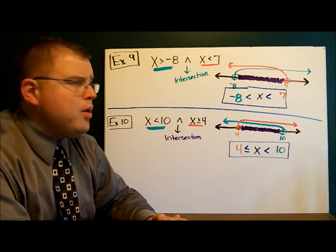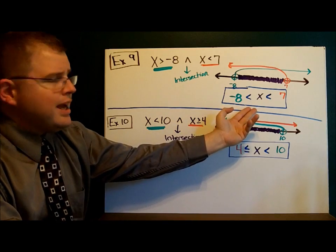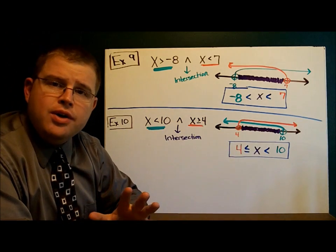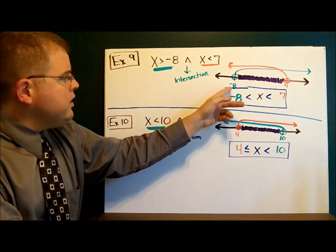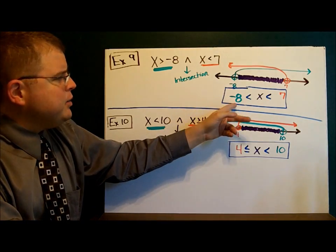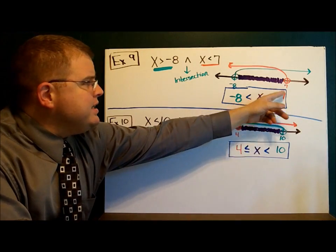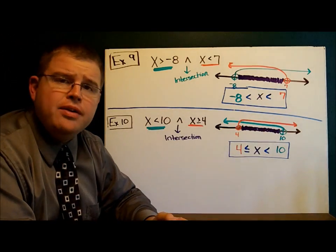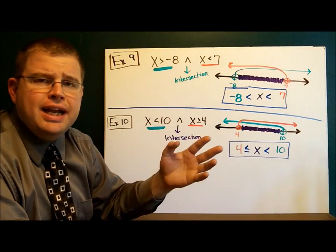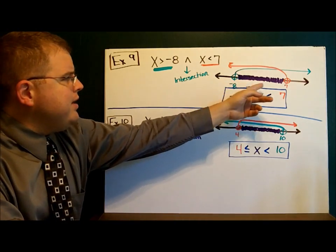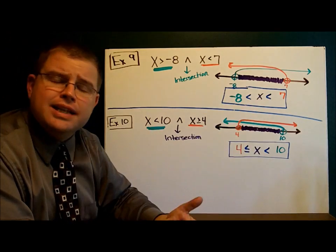Now, how do I go about rewriting this so that it looks like that? All you've got to do is use your number line as your guide. The lowest number is negative 8, so we put negative 8 right here. The highest number is 7, so we put the 7 right there. X is all of the shaded area — the purple area — so x is in between them, and we put the x in the middle.